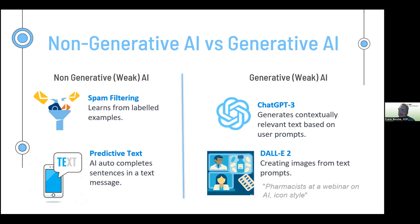Note that generative AI and general AI are both considered narrow or weak AI — although generative AI can generate novel content, it's still performing single tasks such as responding to text or voice prompts, whereas strong AI or AGI needs the full range of human capabilities including reasoning, talking, and emoting. For example, I used the text prompt 'pharmacists at a webinar on AI, icon style' to generate a DALL-E 2 image — it created two pharmacists in a window with medication, just from that simple prompt.